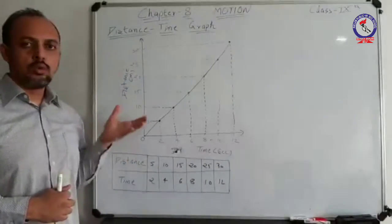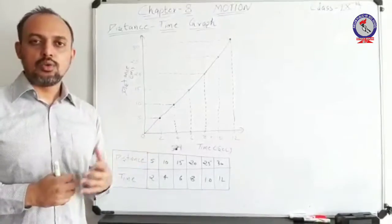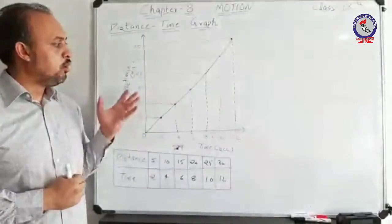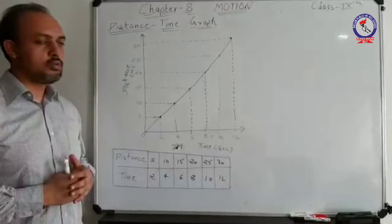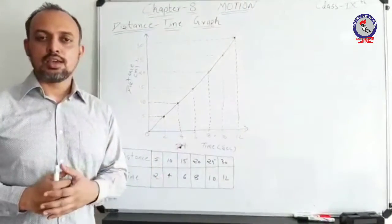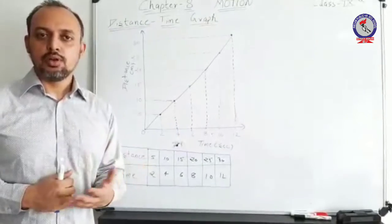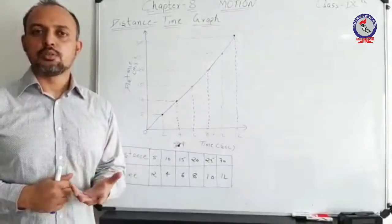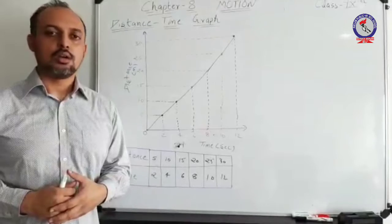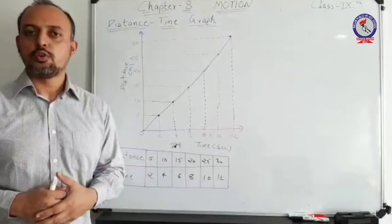By making such a graph we can determine the type of motion. Looking at the graph, it appears to be a straight line. Logically, if it is a straight line it represents uniform motion. But sometimes it may happen that a graph looks straight but does not represent uniform motion.